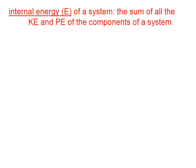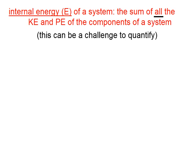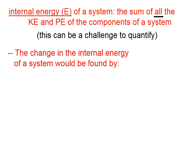Internal energy, symbolized by capital E of a system, is the sum of all of the kinetic and potential energy of the components of a system. This can be a challenge to quantify. Atoms are very, very tiny. Each atom has some amount of kinetic and potential energy, so to quantify the kinetic and potential energy of each atom and add them all up is not easy to do. The change is much easier to find.